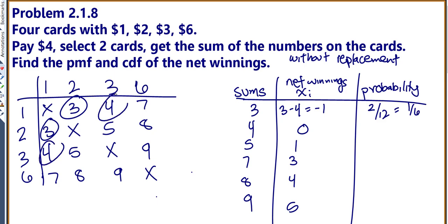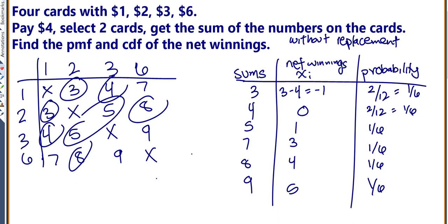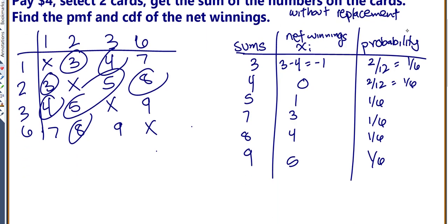For a 4, I had 2 fours, so 2 out of 12, which gives me 1/6. For 5s, it looks like there were 2 of those, which is again going to give me 1/6. 2 sevens is 1/6, 2 eights was also 1/6, and 2 nines was also 1/6, because each of them had a probability of 2 out of 12, or 1/6. So that is my PMF.